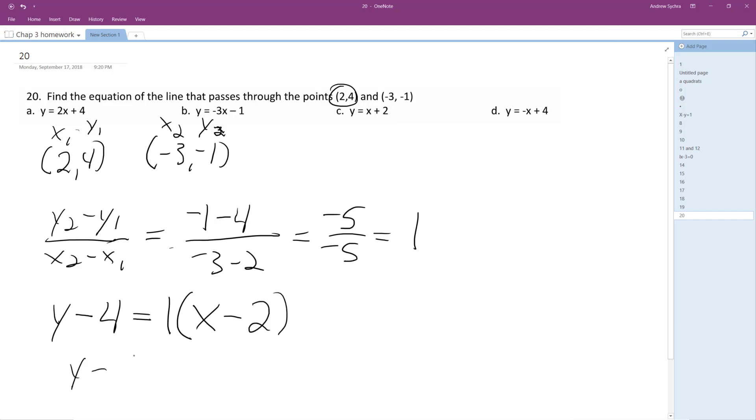So we get y minus 4 is equal to x minus 2, add 2 to both sides. We get y is equal to x plus 2, which is right here, and we can test it real quick.